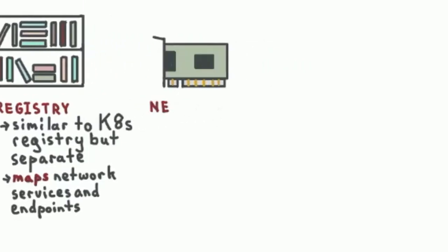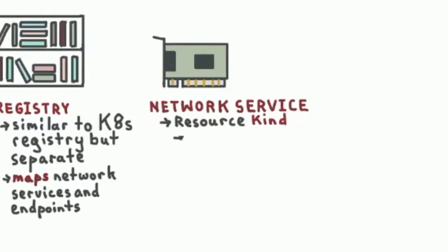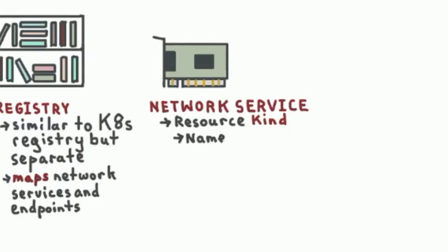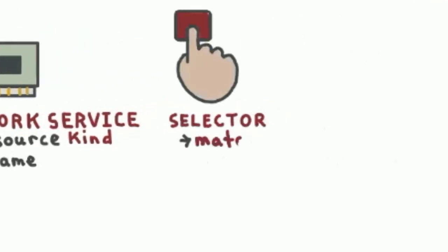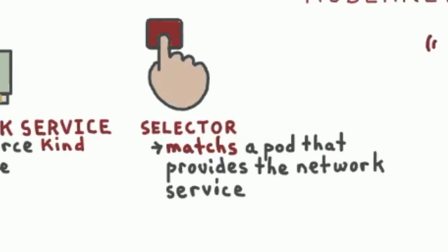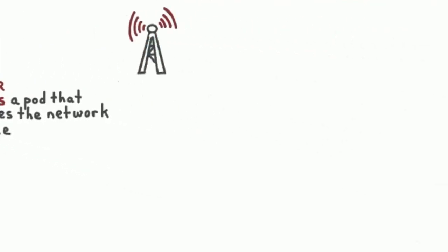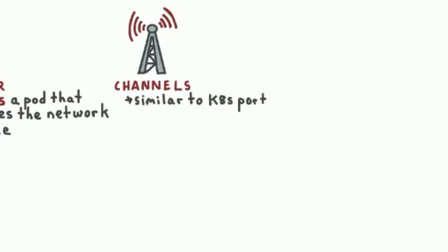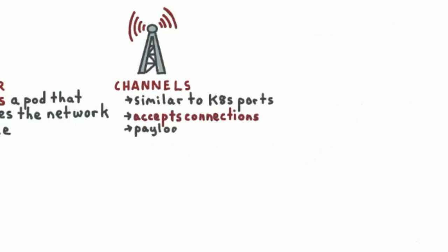First, let's have a totally separate kind, a different resource, so we don't screw up what works for Kubernetes services for applications. Give it a name, have a selector that will match a pod that provides this network service. And here's where we deviate at the first point: rather than having a thing called ports, we'll call it channels, to avoid the infinite overload of the word ports in networking.